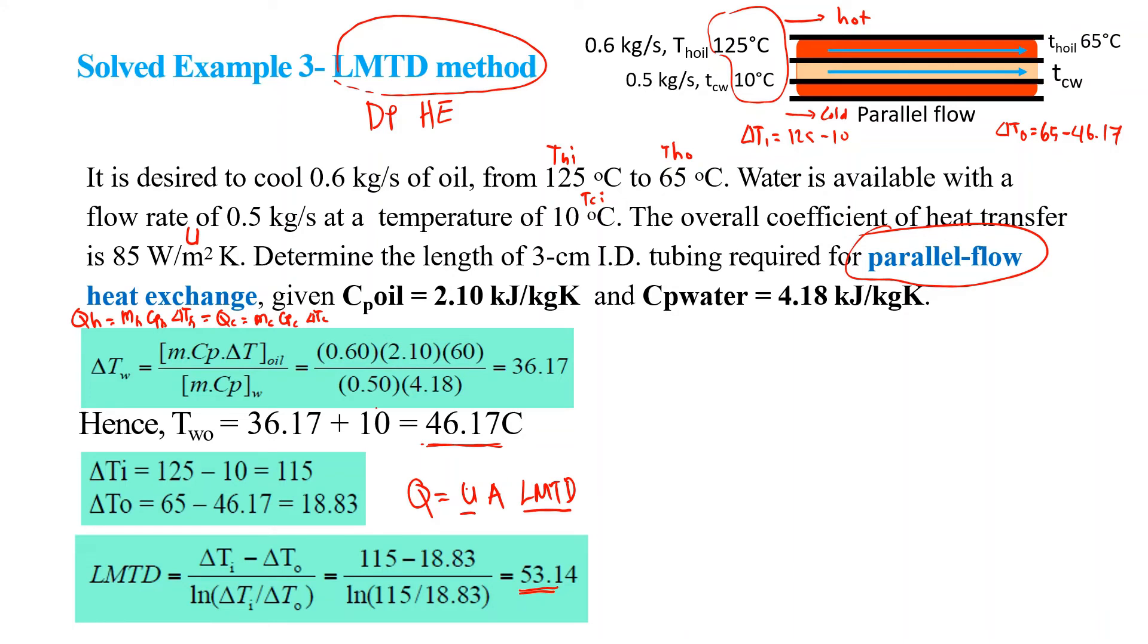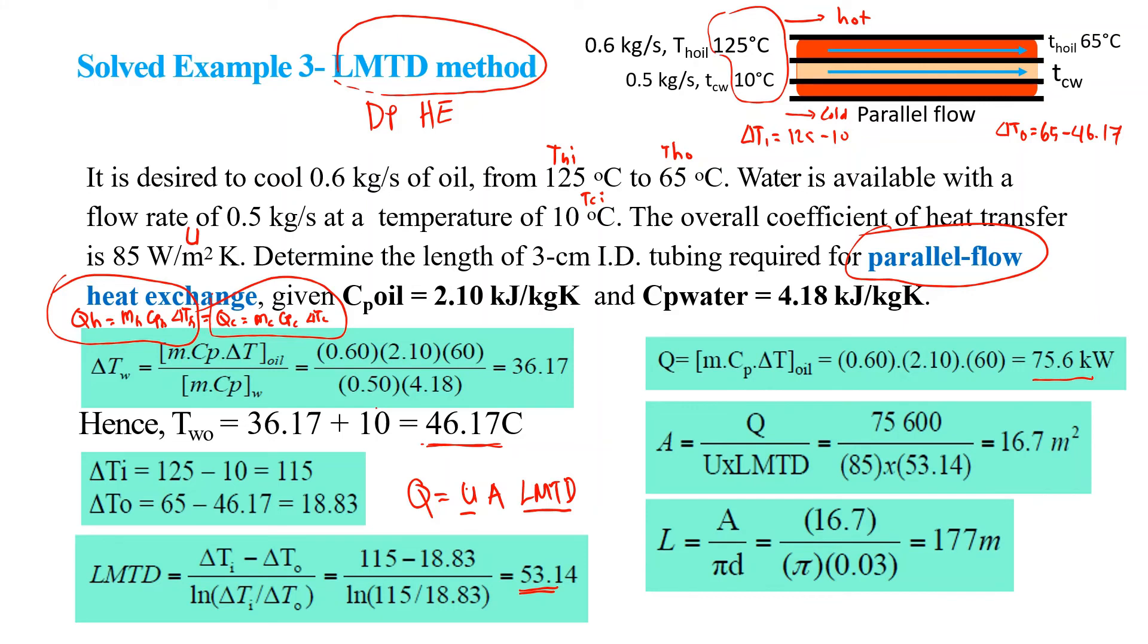Q can be found using either equation. We find Q equals 75.6 kilowatt. Next we use Q = U·A·LMTD, and we find the total area of the double pipe heat exchanger is 16.7 m². Then we can calculate the length of the required pipe using this equation. The total length is 177 meters.